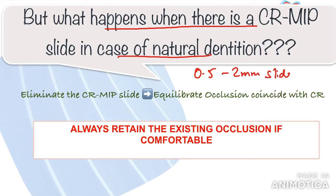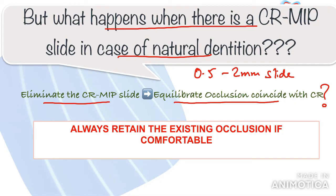So does that mean we should correct this and bring the patient's occlusion to coincide with centric relation? For example, if I have a bridge to place and I find out that the patient has a shift from centric relation to MIP — do I equilibrate the entire occlusion to centric relation? No, not at all. You can go ahead and fix the bridge retaining the same occlusion, as the patient has no complaints and is comfortable with the already existing occlusion.